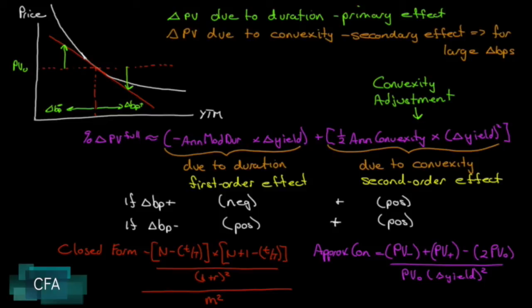Well what convexity does is it then adjusts our estimates to reach the curve. So on a decrease in yield, the new price of the bond is understated, so our convexity correction will add to that. Whereas on an increase in yield, our present value is also understated—it should be higher—so the convexity correction also corrects for that.